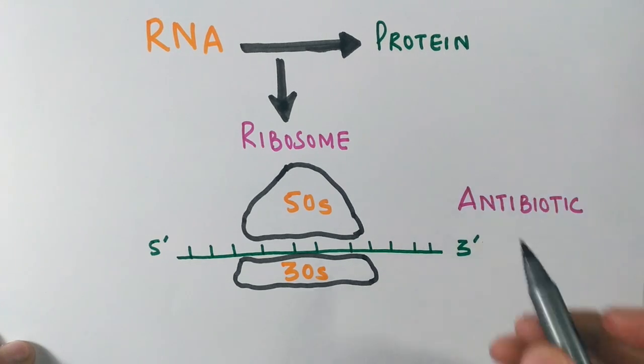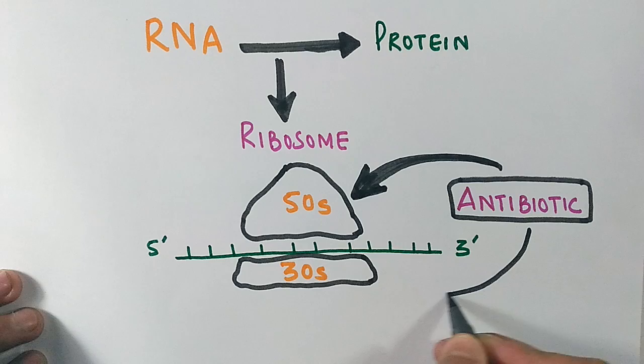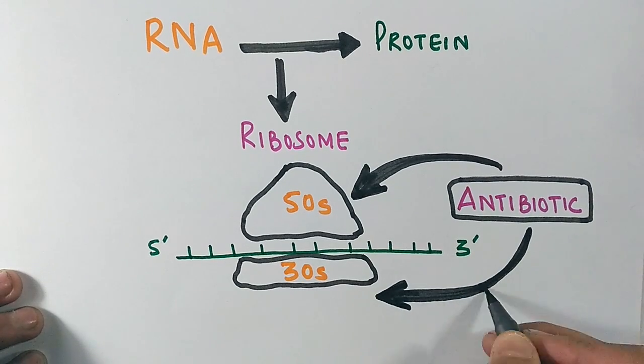So the antibiotics target the 50S unit as well as the 30S unit of ribosome and inhibit protein synthesis. Also, some antibiotics target mRNA chain, thereby deforming the shape of mRNA chain, and tRNA misreads the codon present on it, thereby terminating the process.